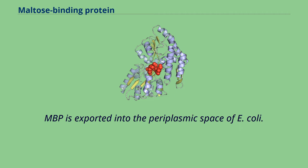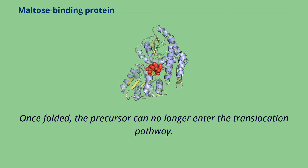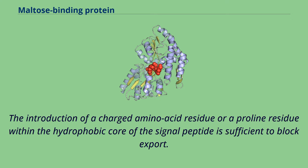MBP is exported into the periplasmic space of E. coli. The NH2 terminal extension of MBP, also termed signal peptide, has two roles: it slows down folding of the newly synthesized polypeptide, and it directs this polypeptide to the membrane and Sec translocon. Once folded, the precursor can no longer enter the translocation pathway. The introduction of a charged amino acid residue or a proline residue within the hydrophobic core of the signal peptide is sufficient to block export.